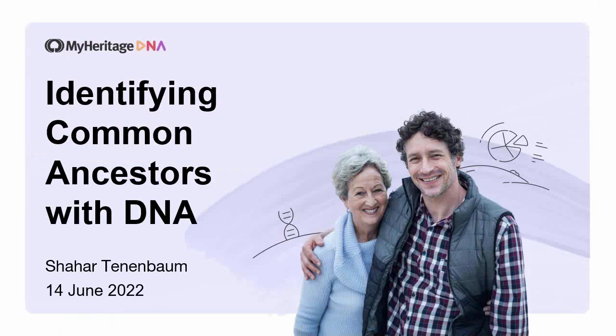Sheila suggests: would MyHeritage consider adding a search by triangulated segments on the shared match list? That's a very good idea — I'll take it and suggest it to our product team. If people have suggestions, you can contact the support team, the sales team, or reach out on social media — Facebook, Twitter, or Instagram — and the teams there will be very helpful in forwarding that message to us.